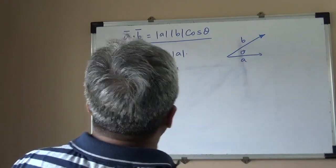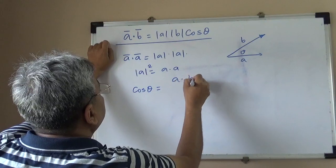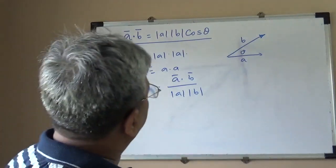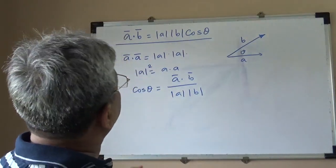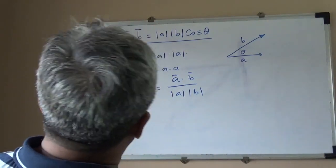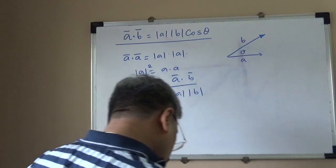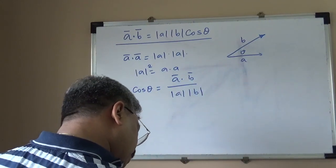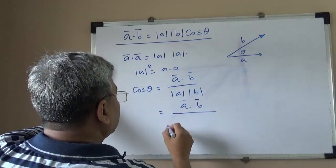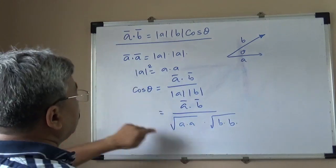We can also find the angle between two vectors. cos θ equals A·B divided by |A| times |B|. Taking cos inverse gives us the angle. This scalar product is very useful in the algebra of vectors because it helps us get the magnitude of the vector and the angle between two vectors. We can write this as: cos θ = (A·B) / (√(A·A) × √(B·B)).